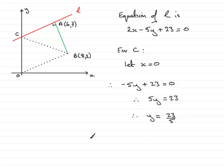So I can then say that therefore C has coordinates 0 and then 23 fifths. All right, so that brings us nicely to the end of this part of the question.